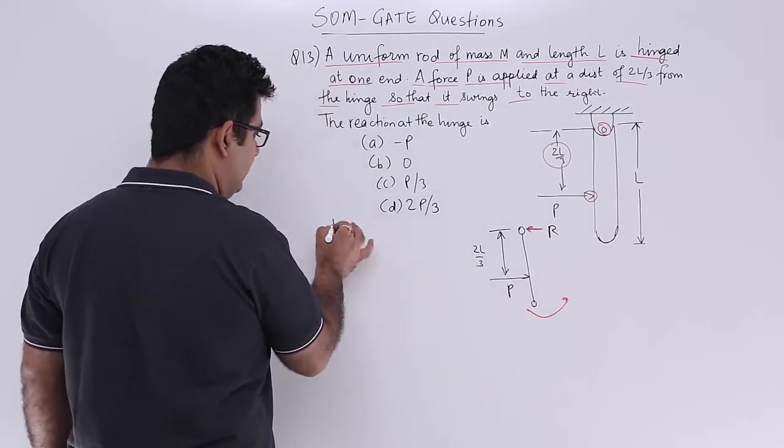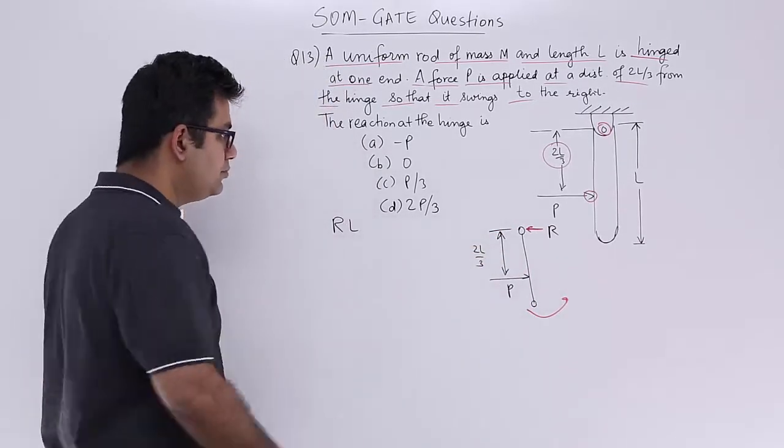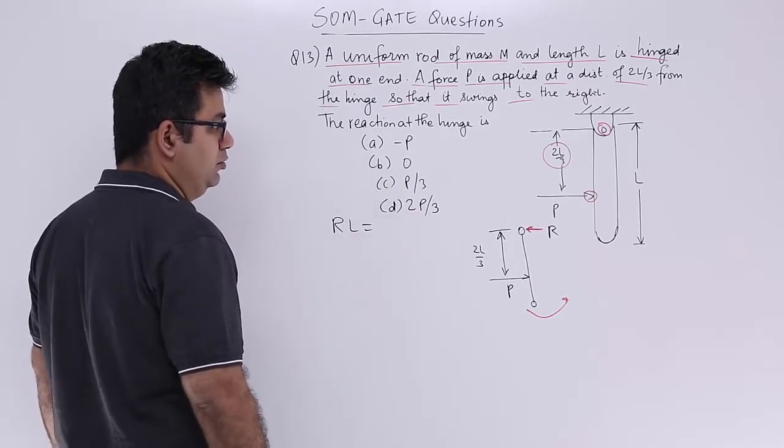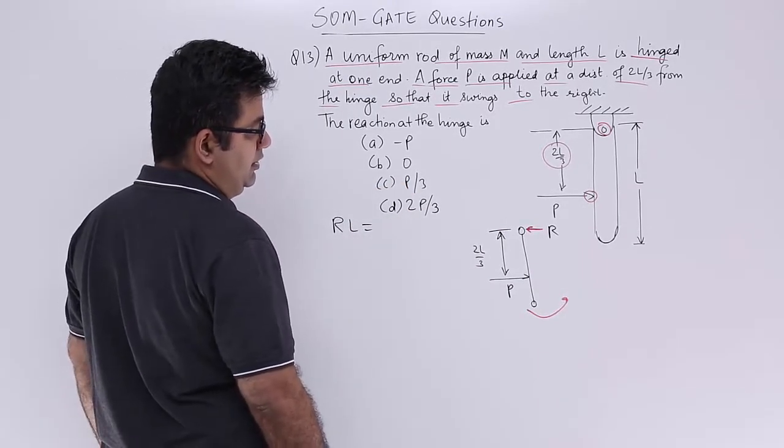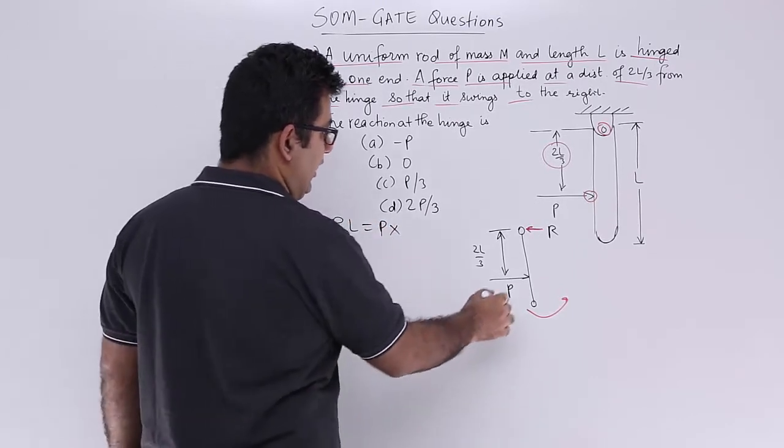So R into L, that is the moment of the reaction about the free end, is equal to P into L by 3.